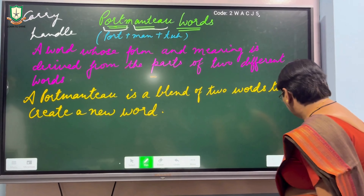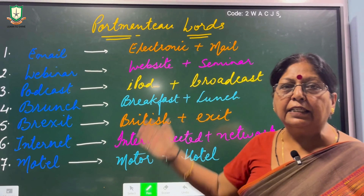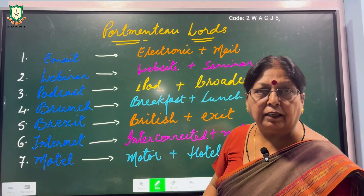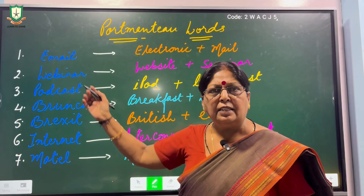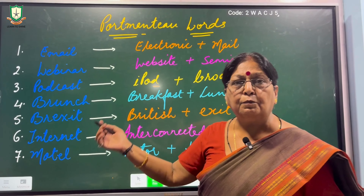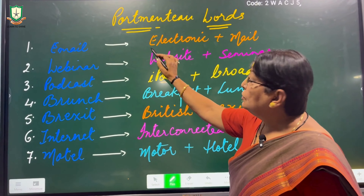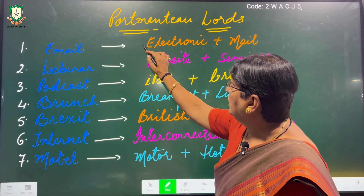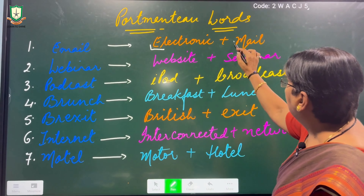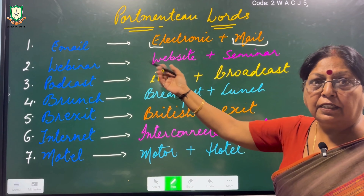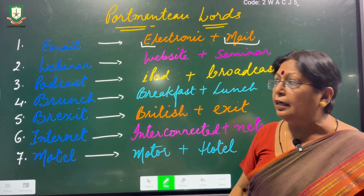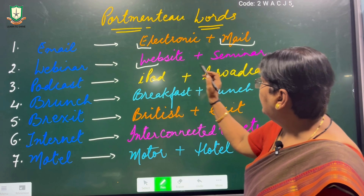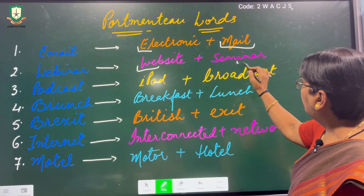Let me give you some examples. Look at the first word: email. Email has been made from two parts of two different words. We have taken 'e' from electronic and 'mail' from mail, so it becomes 'email.' This is a portmanteau word. The second example is 'webinar' — we have taken 'web' from website and 'inar' from seminar.